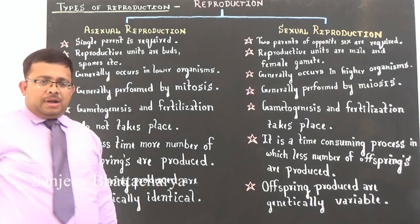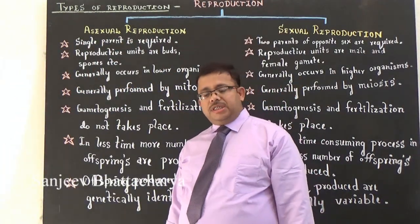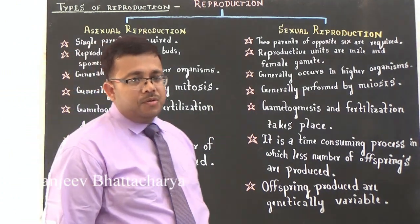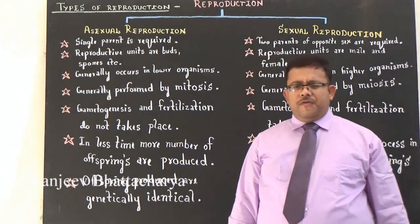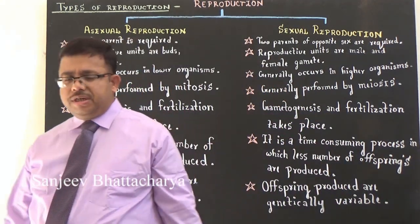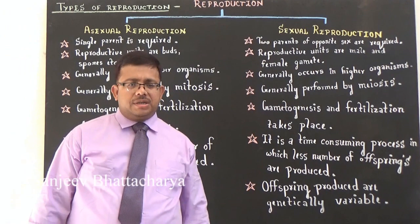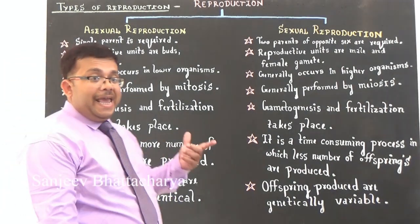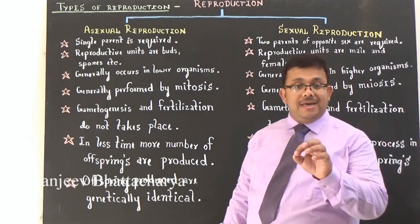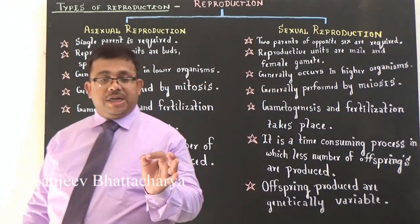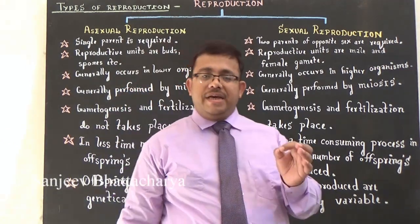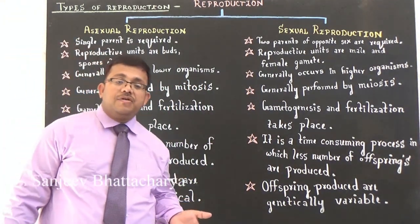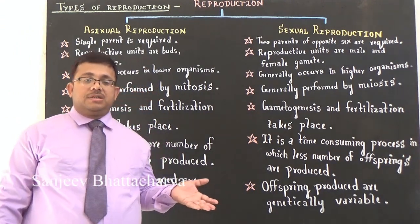Reproduction is mainly of two types: Number 1, asexual reproduction, and Number 2, sexual reproduction. In asexual reproduction, 'A' means absent — sex is absent, meaning the reproduction in which sex organs are not utilized is termed asexual reproduction. Just opposite to this, the reproduction in which sex organs are utilized is termed sexual reproduction.